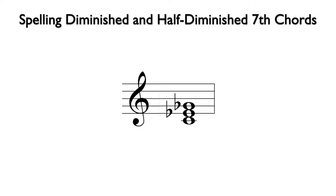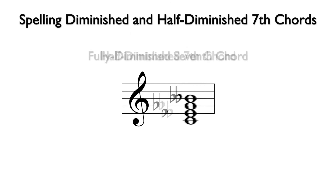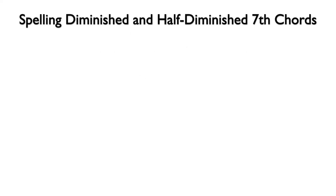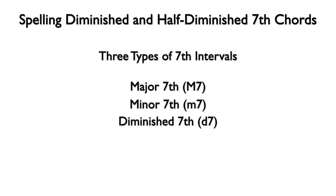When a 7th is added to a diminished triad, the chord can become a half-diminished 7th chord or a fully diminished 7th chord depending on the type of 7th that is added. Let's first look at three types of 7th intervals: major 7ths, minor 7ths, and diminished 7ths.